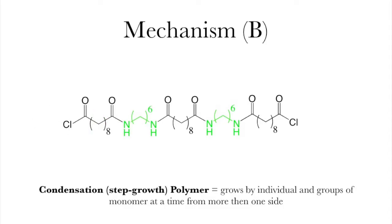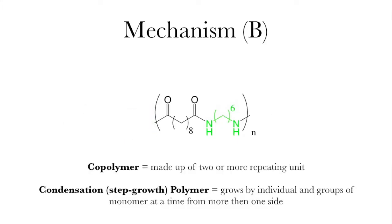It is much, much faster than the addition growth polymerization. Once again we symbolize the final polymer by using parentheses around the two repeating monomer units and a subscript of N.